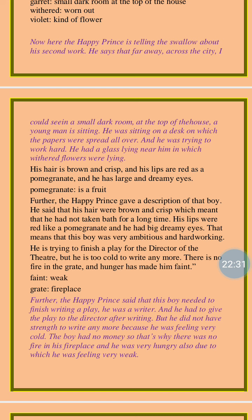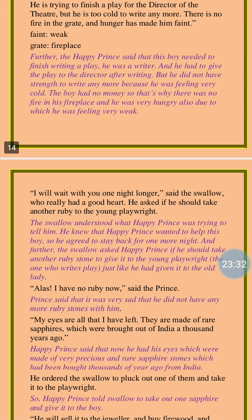His hair being brown and crisp meant he had not taken a bath for a long time. His lips were lit like a pomegranate, and he had big dreamy eyes — which means the boy was very ambitious and hard working. He was trying to finish a play for the director of the theater but was too cold to write anymore. He was sitting in the garret where he could not enjoy the warmth of a fire because he was very poor, and his hunger could also make him faint. This type of misery the Happy Prince could not see, and he wanted to help that young man.